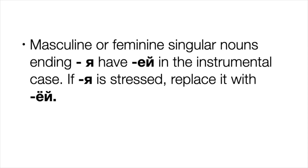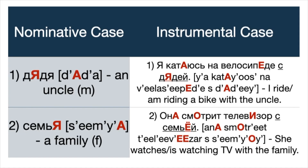Masculine or feminine singular nouns ending in -я get -ей in the instrumental case. If -я is stressed, replace it with -ёй. Number one: дядя — masculine noun → дядей. Example: Я катаюсь на велосипеде с дядей — I ride a bike with the uncle. Number two: семья — feminine noun. Example: Она смотрит телевизор с семьёй — She watches TV with the family.